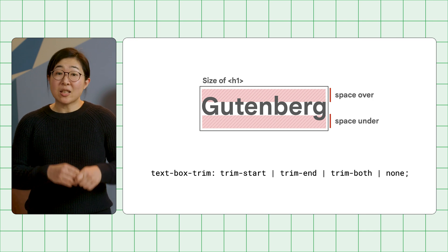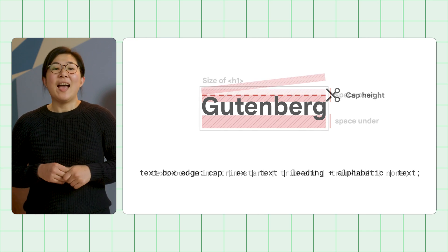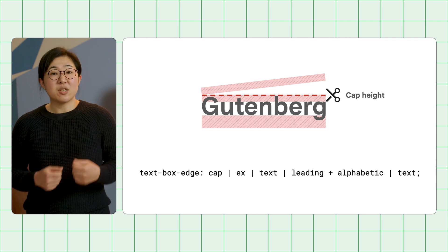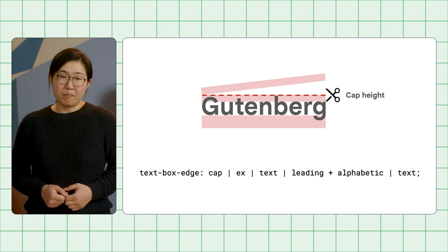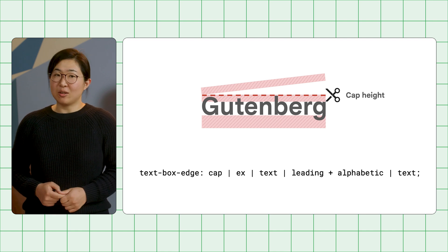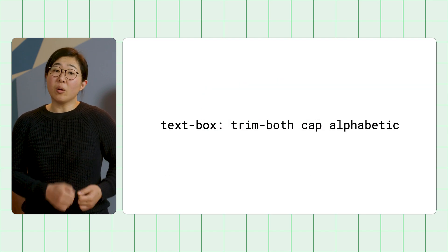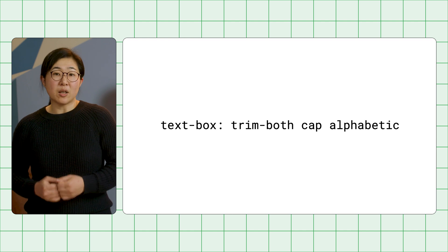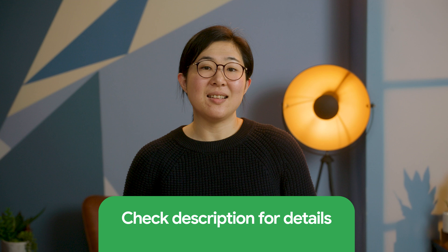The new TextBoxTrim property specifies the sides to trim above and below, and the TextBoxEdge property specifies how it should be trimmed. For example, trim at cap height, which is the top of uppercase characters. You can also write this using the shorthand TextBox property as well. Find out more about how to use these new properties in the CSS TextBoxTrim article.